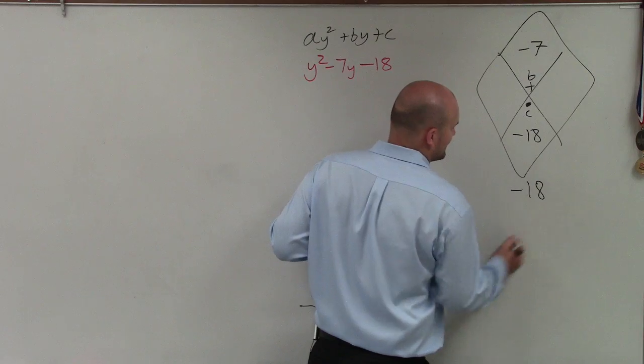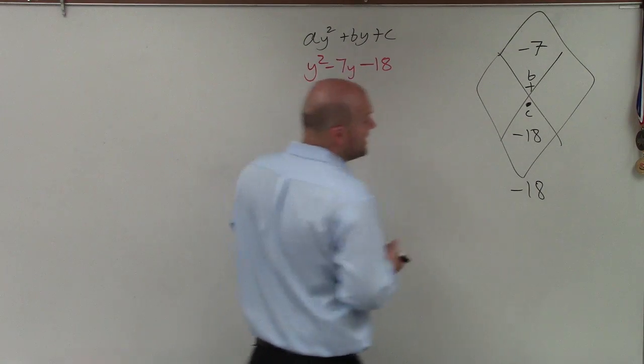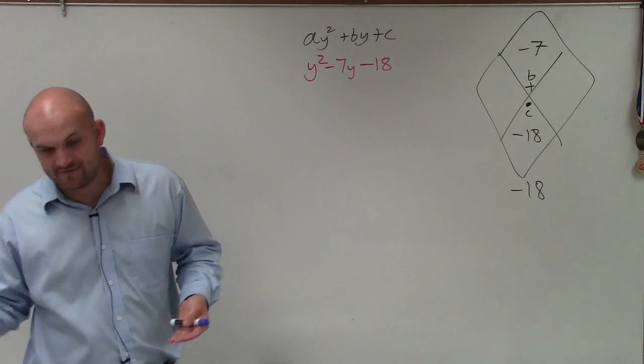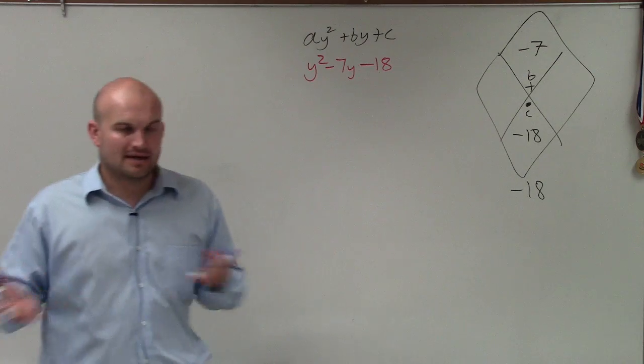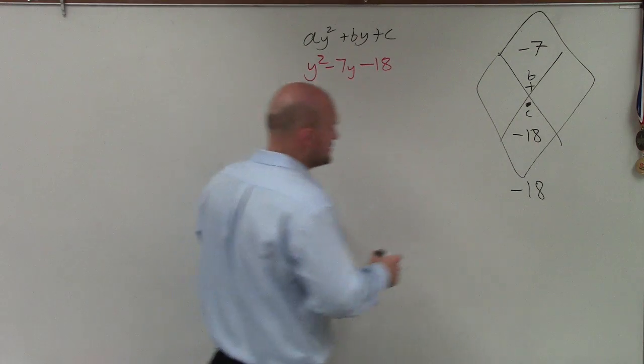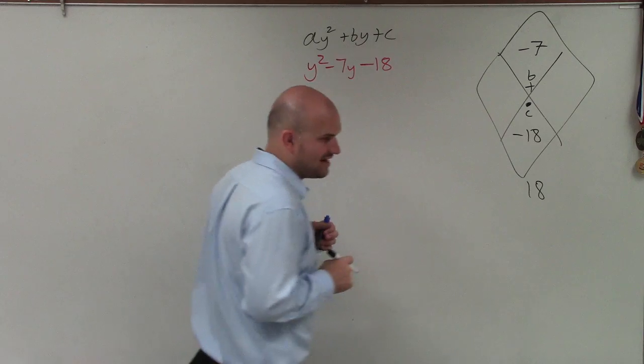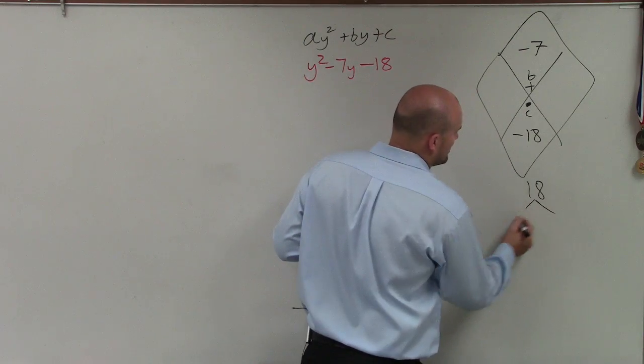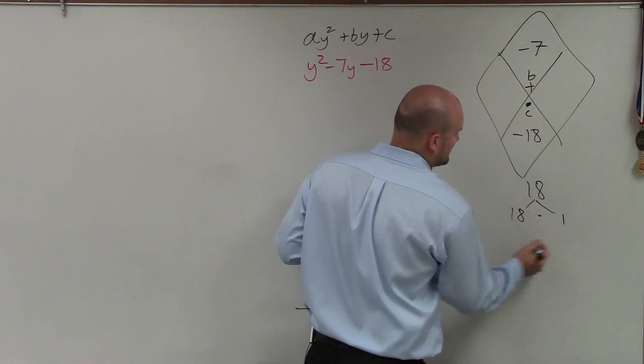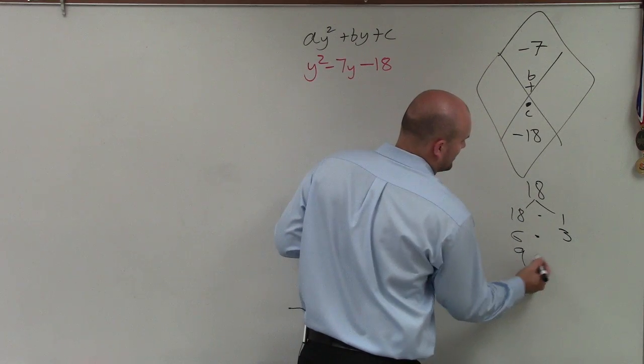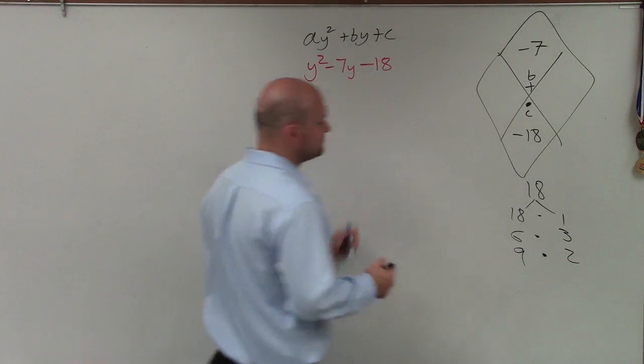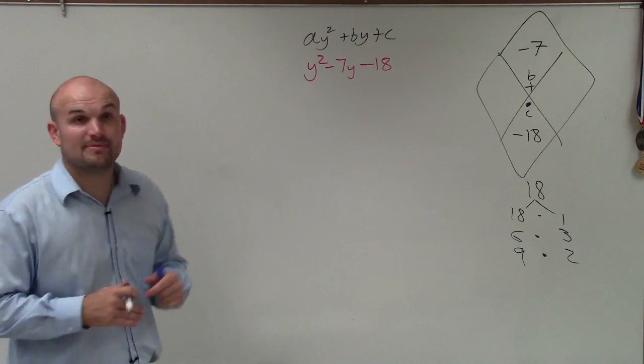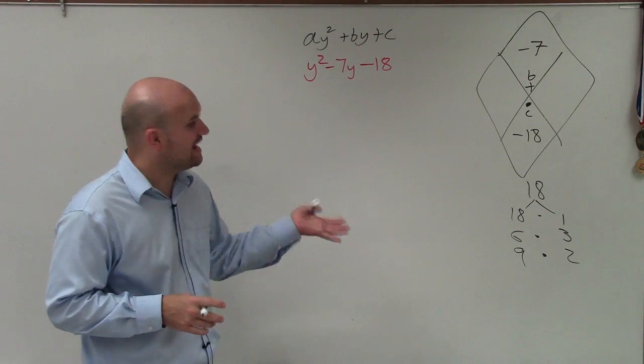So therefore, I take my factors of negative 18. Now remember, negative 18, one factor has to be negative, one factor is going to have to be positive. So I'm just going to label the factors, forgetting about them being positive or negative at the moment. So I'll start from 18 times 1, 6 times 3, 9 times 2. And those are going to be all the factors for 18.